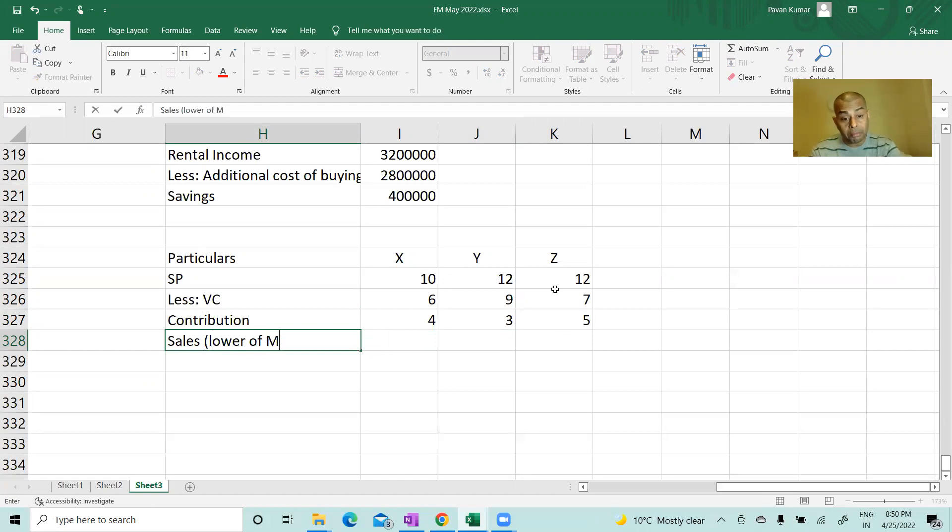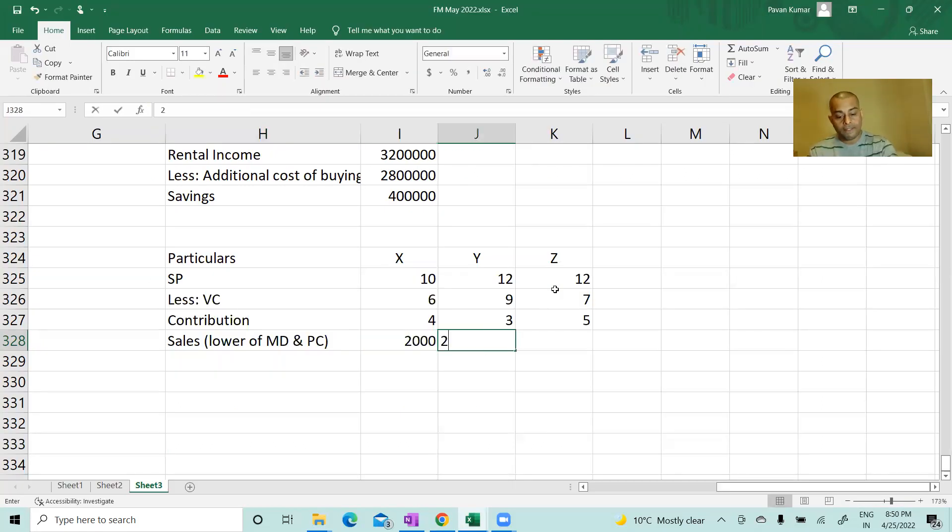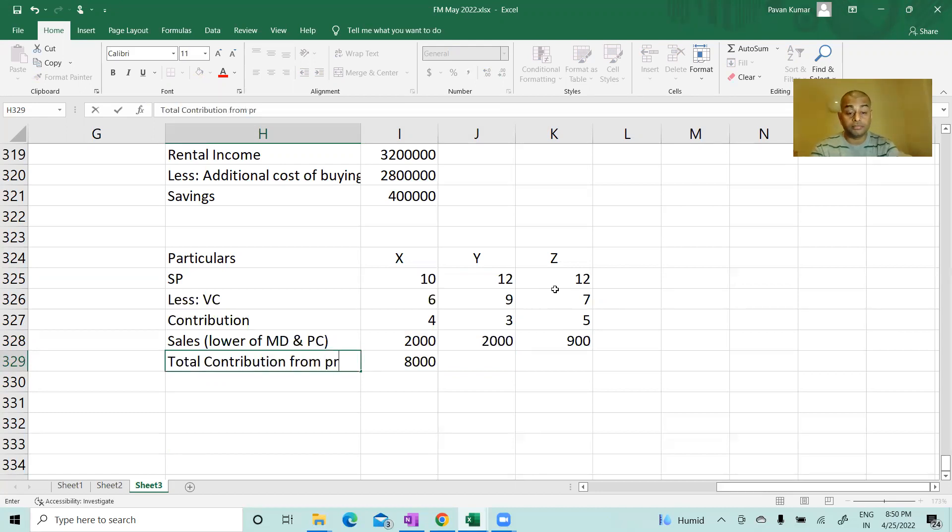Possible contribution. We will write sales - lower of market demand and production capacity. MD means market demand, PC means production capacity. Sales is the lower of these two. So 2000, 2000, 900. Maximum contribution or total contribution: contribution per unit and number of units. Maximum contribution for each product.